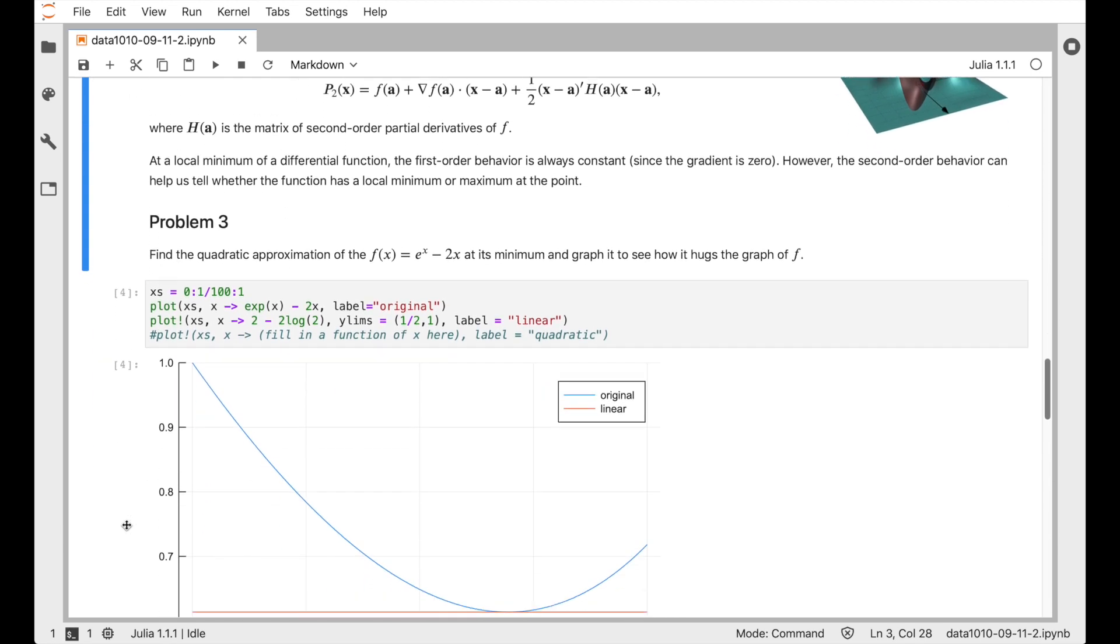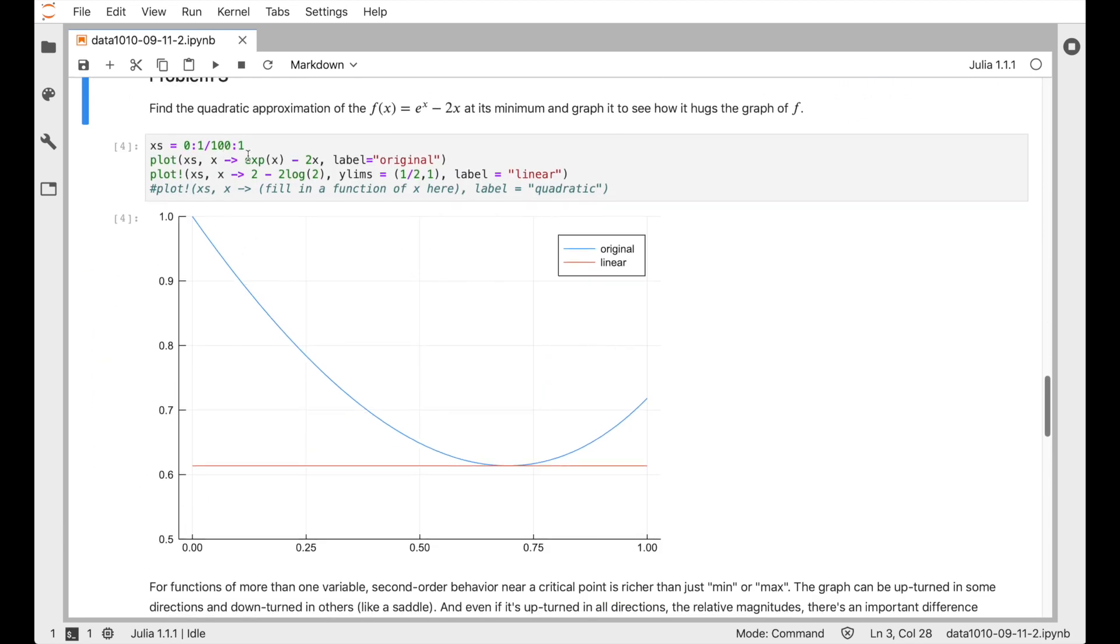So let's look at an example with a single variable. So we have this function e to the x minus 2x, and here's its graph over the interval from 0 to 1, and you can see it has a minimum right there. And we can identify where that minimum is by differentiating the function. If we differentiate e to the x minus 2x, we get e to the x minus 2. If we set that equal to 0 to find where this function is going flat, we find that x is equal to log of 2. So that's going to be that value.